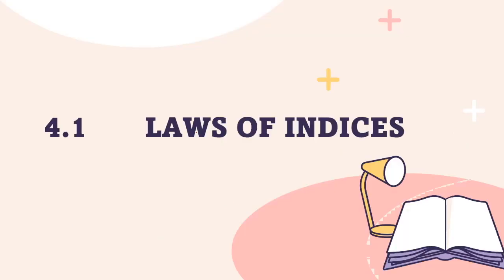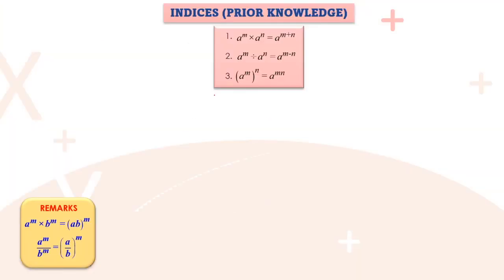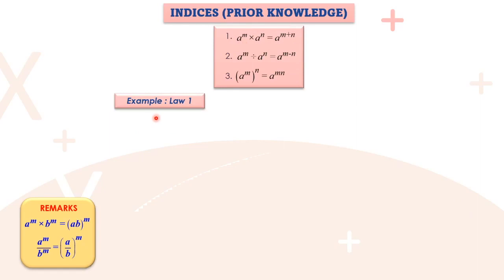Next, after index notation, we learn laws of indices. These are in Chapter 4 Form 4, section 4.1, but we first encountered them in Form 3. There are three basic laws. The first law: a to the power of m times a to the power of n — when the base is the same and we are multiplying — we can add the indices together, giving a to the power of m plus n.